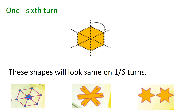One sixth turn. You all know a hexagon has six sides. From one tip of the hexagon to the other tip will give you one sixth turn. Any shape having six tips will look the same on one sixth turns.